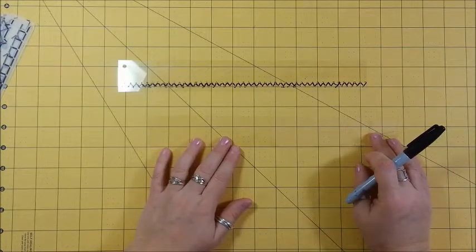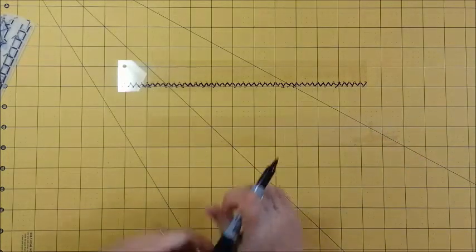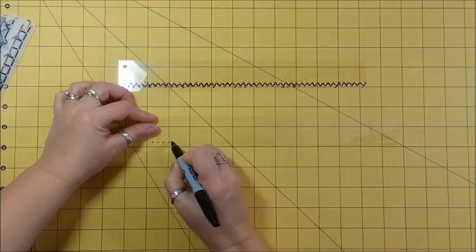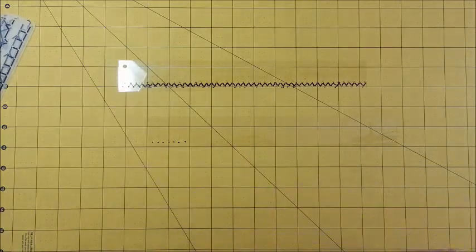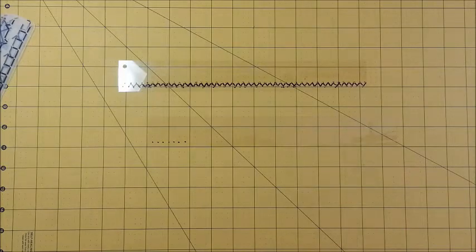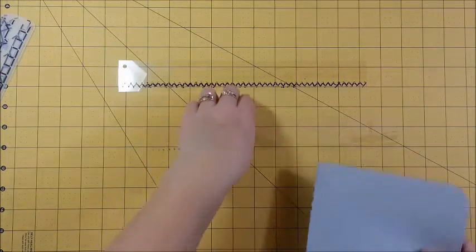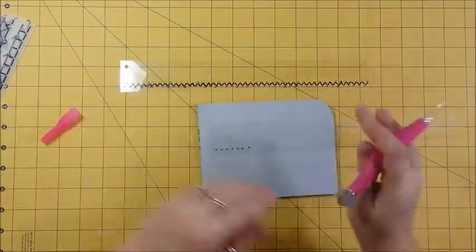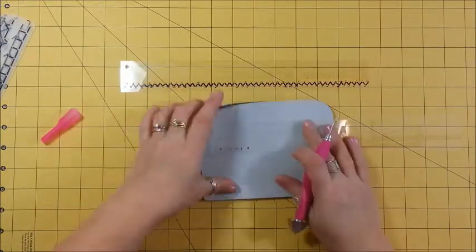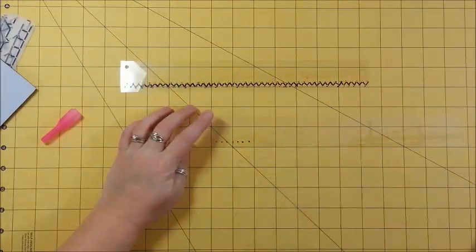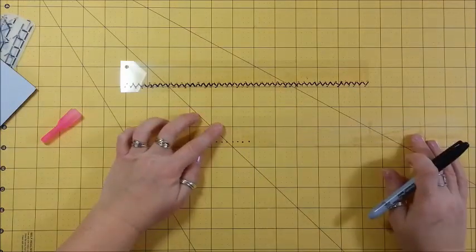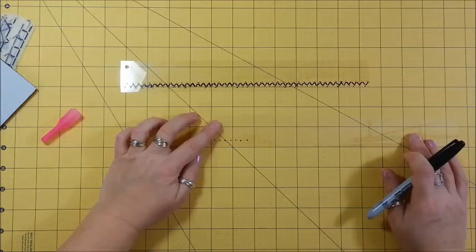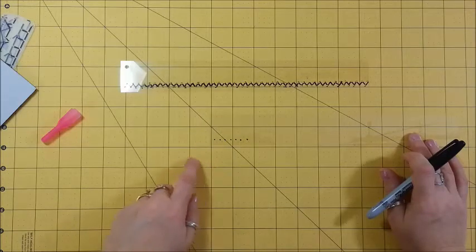So all I did was line it up and I'm lining it up on my mat because there's already measurements there. And then I just put a dot every quarter of an inch. And then once I got done putting all the dots all the way across, then I offset it. So I moved the dots halfway between the dots on the grid.